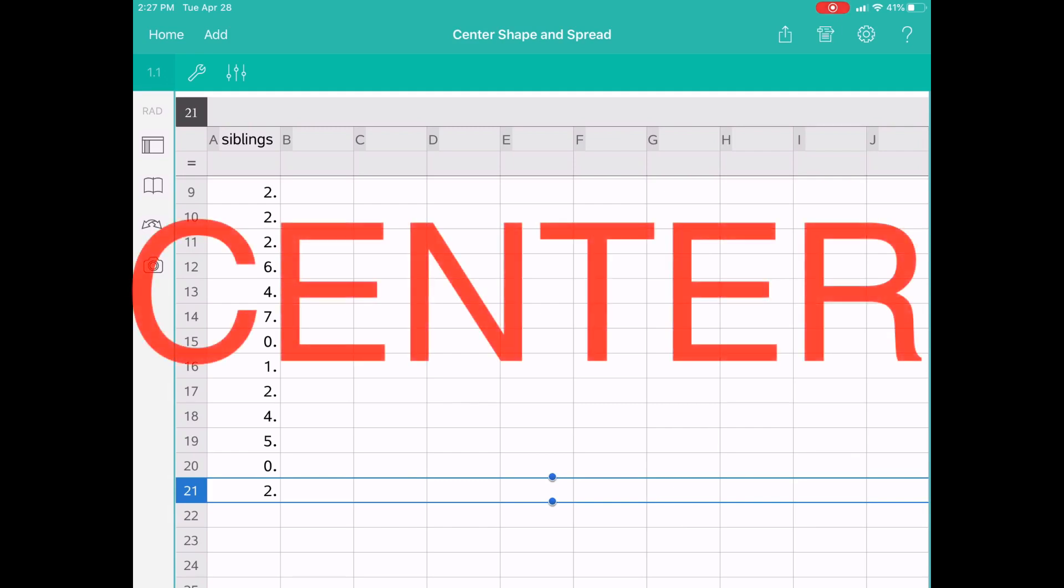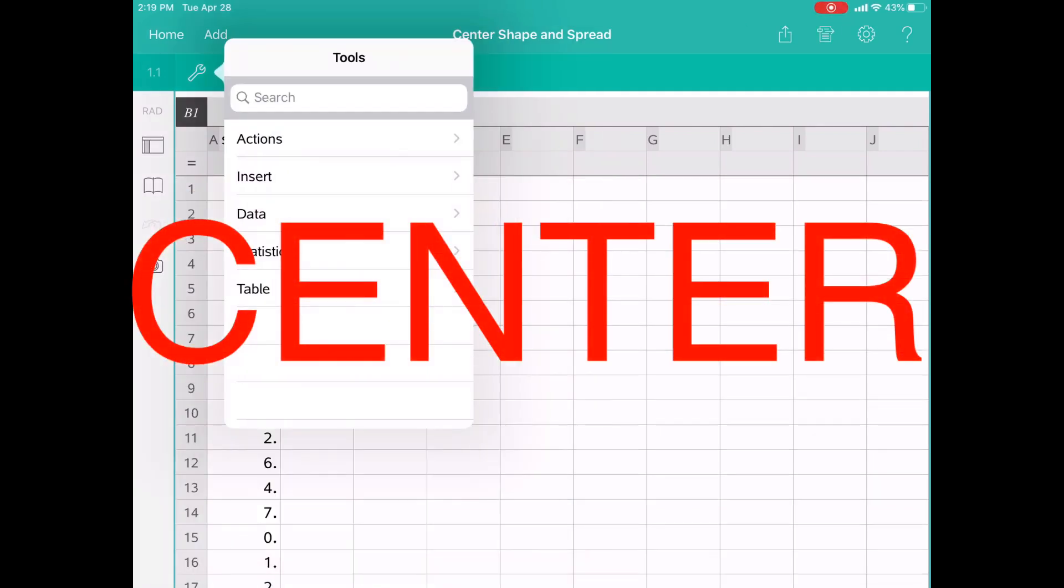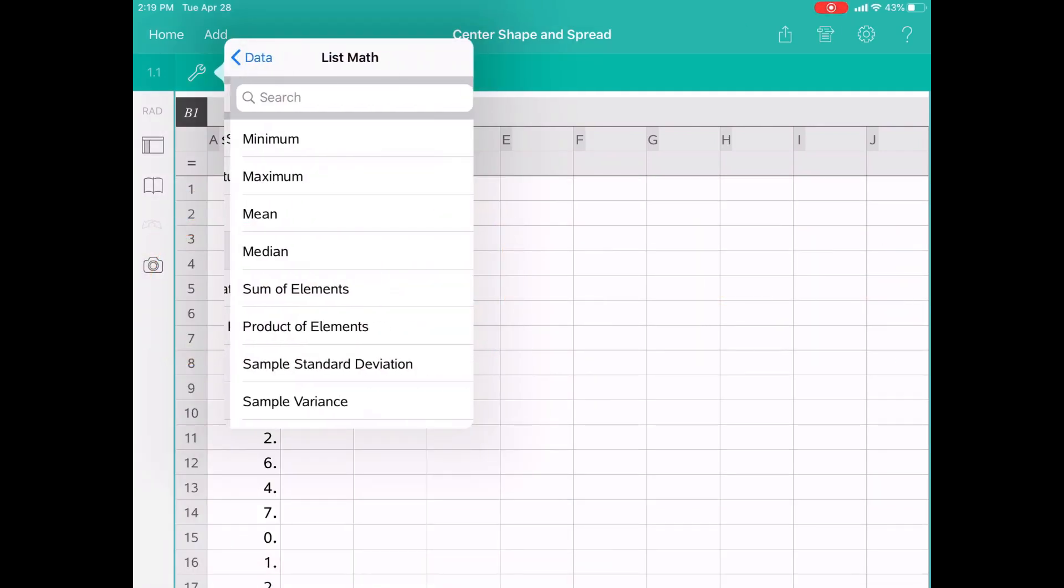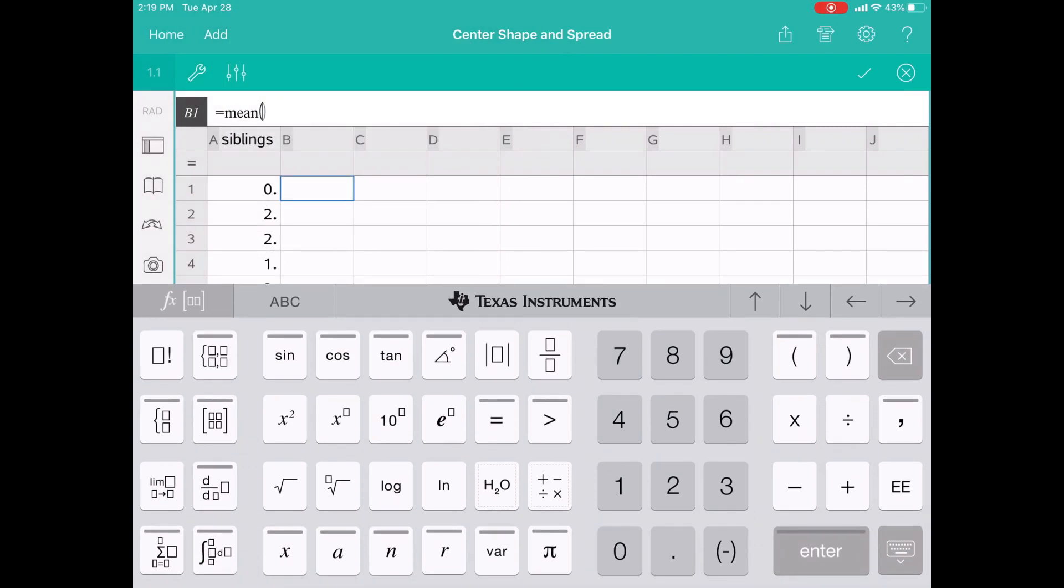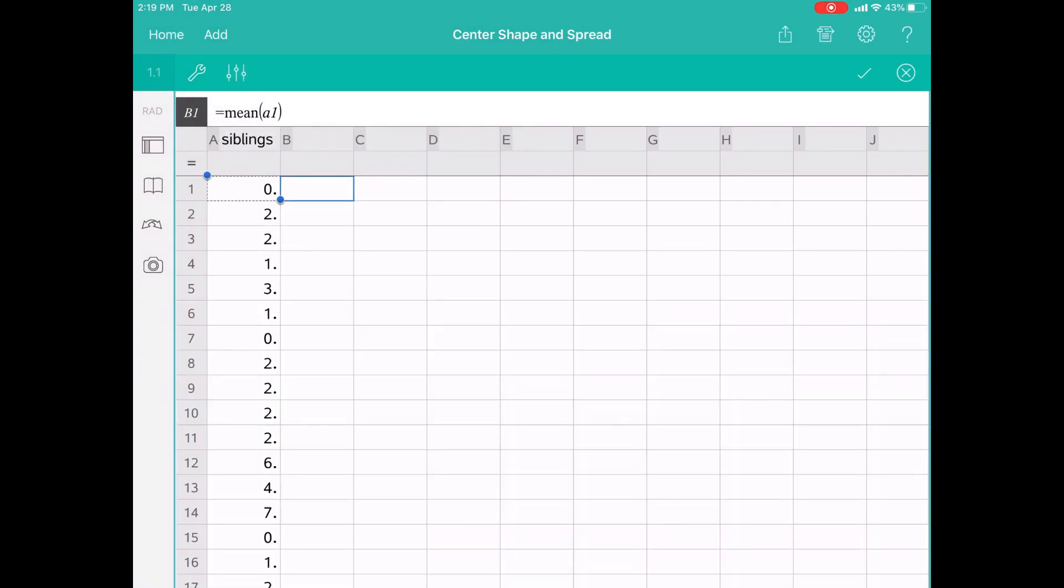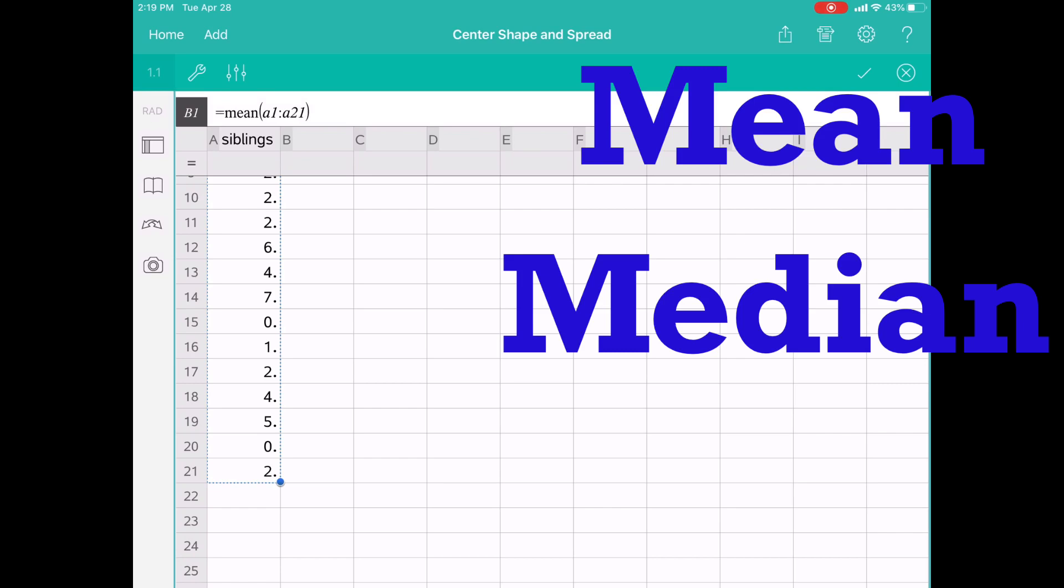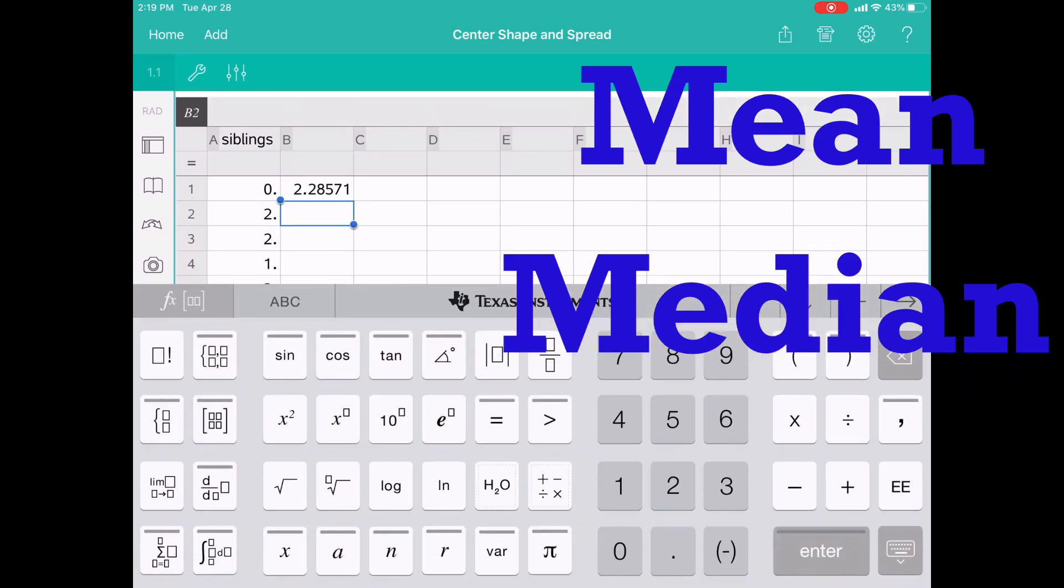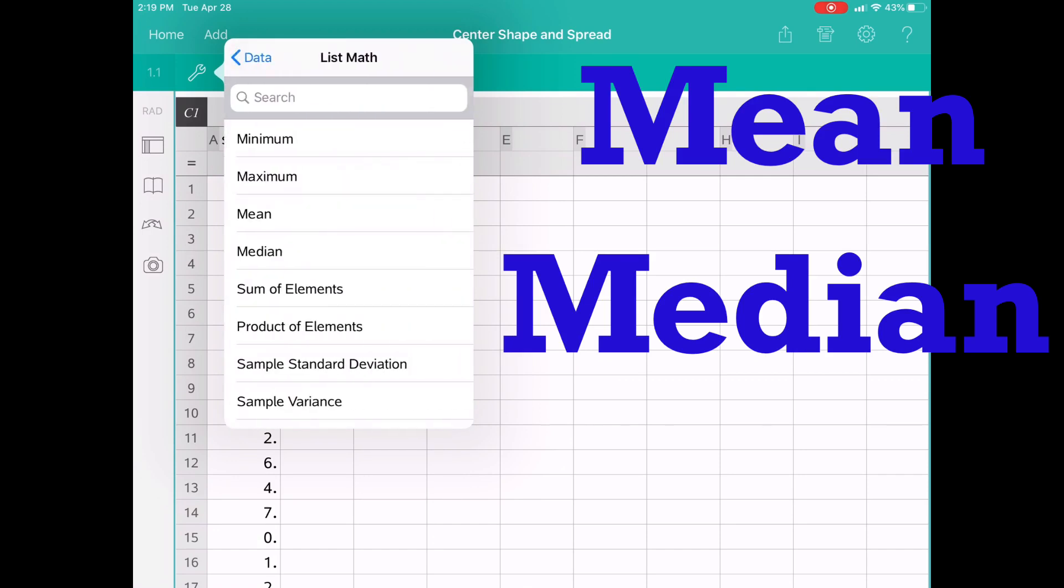We can precisely analyze the shape of the data by looking at the center. The two measures of central tendency used to analyze the shape are the mean and the median. As you can see here, I am using the menu items in the spreadsheet to generate the mean and the median quickly for me.